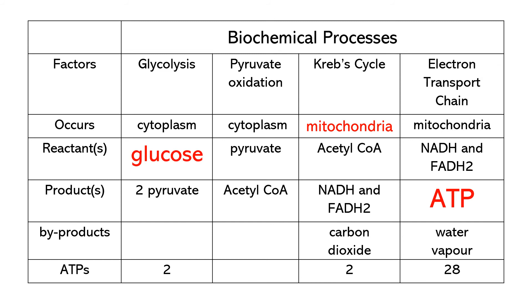Each of these processes occurs within the cell. Glycolysis and pyruvate oxidation occur in the cytoplasm, while the Krebs cycle and electron transport chain occur in the mitochondria. Each process needs specific reactants: glycolysis needs glucose, pyruvate oxidation needs pyruvate, Krebs cycle needs acetyl-CoA, and electron transport chain needs NADH and FADH2.